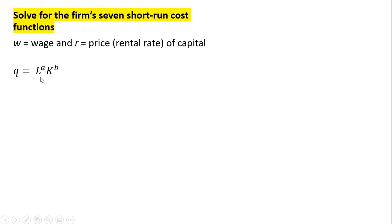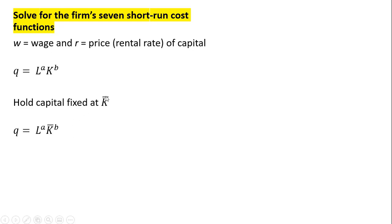Q is the quantity of output, L is units of labor raised to the power of A, K is units of capital raised to the power of B. We're going to hold capital fixed in the short-run at K bar. So our first step is to make a substitution into our production function — K is being held fixed at K bar, so we replace K with K bar.